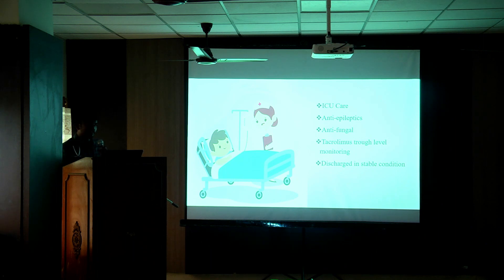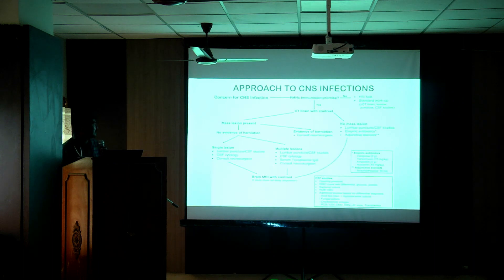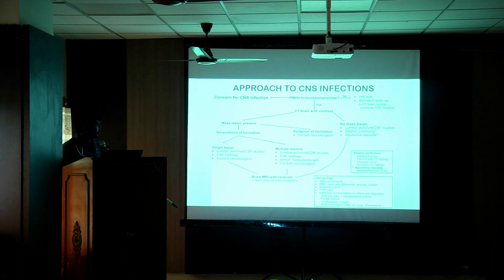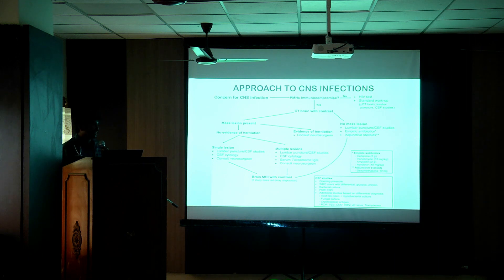The patient was discharged in a stable condition after 45 days of admission. In the brief discussion on CNS infection: whenever you come across CNS infection, particularly in an immunocompromised patient, imaging must be done first — either CT with or without contrast. If there is a mass lesion with evidence of herniation, consult a neurosurgeon. CSF profile gives a major clue for diagnosis. In CSF, look for opening pressure, WBC with differential count, and bacterial culture. To rule out TB, request acid-fast stain and mycobacterial culture. In special situations, also send fungal culture, cryptococcal antigen, and viral PCR.